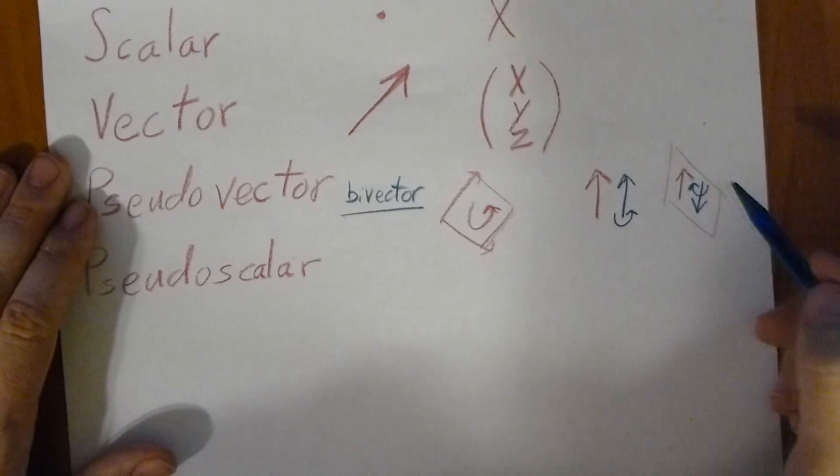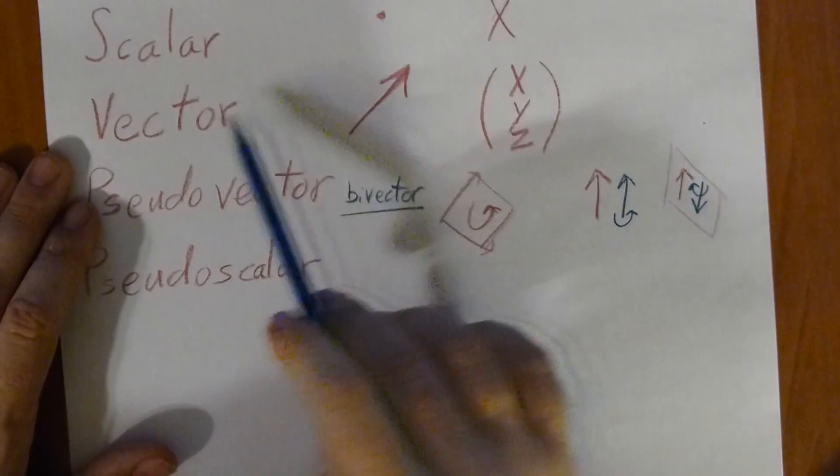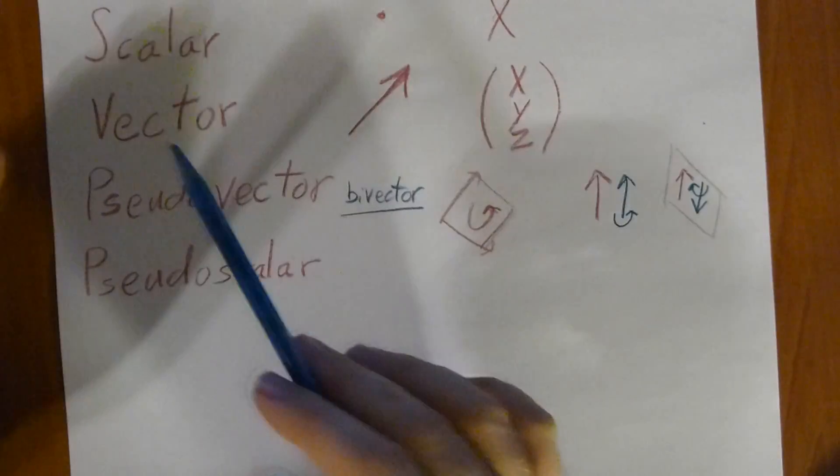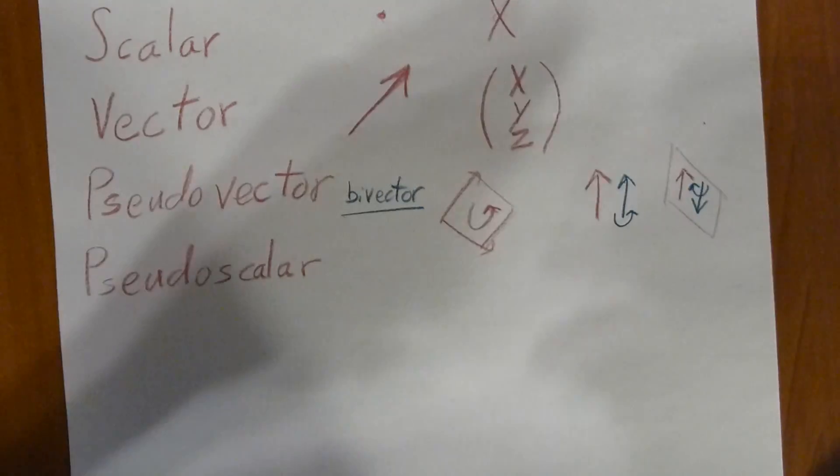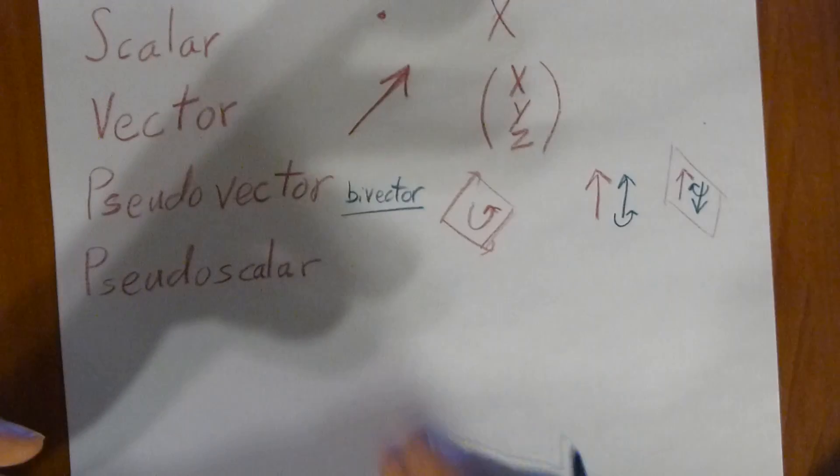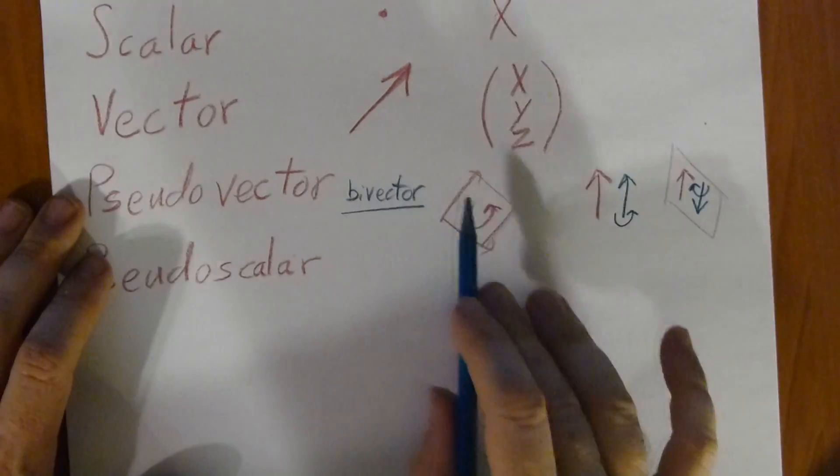Whereas a vector would include things like an electric field, magnitude and direction, water velocity or stress—the way water flows, wind velocity. All these things are vectors: magnitude and direction.